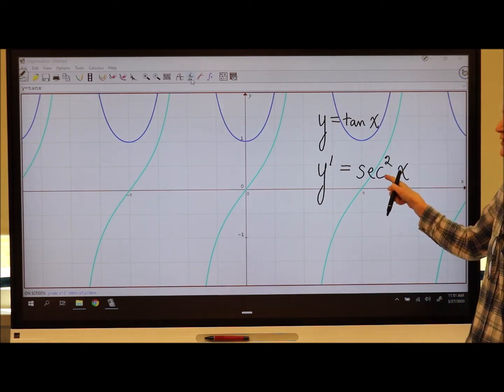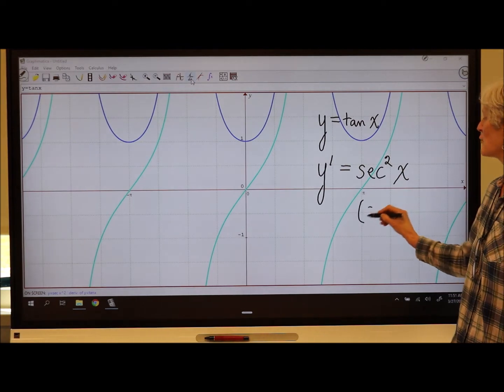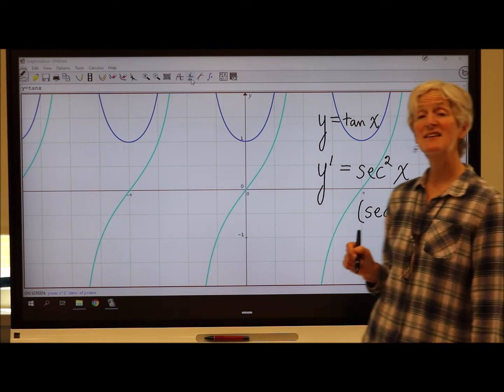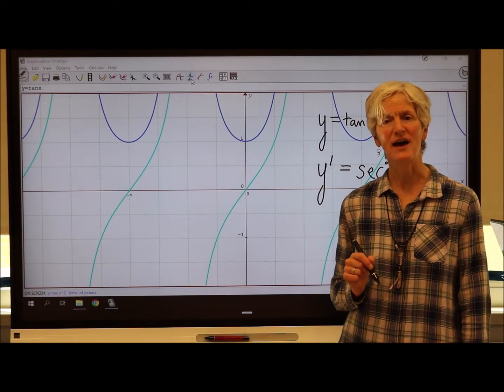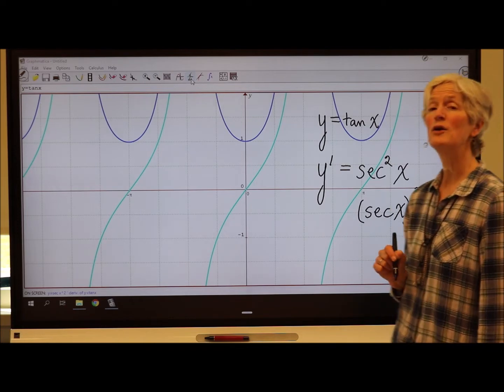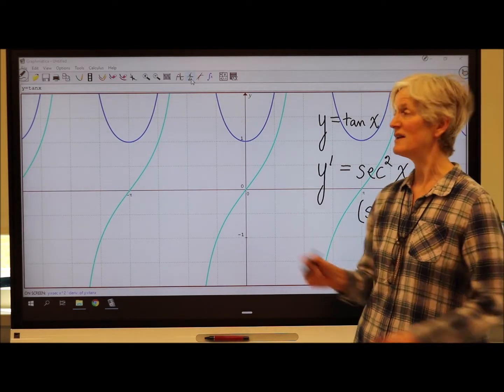Now, just a reminder. Secant squared x is what that really means, of course, is the secant of x squared. Remember, secant is one over cosine of x. So another way to think about the derivative of tan would be one over the cosine of x quantity squared.